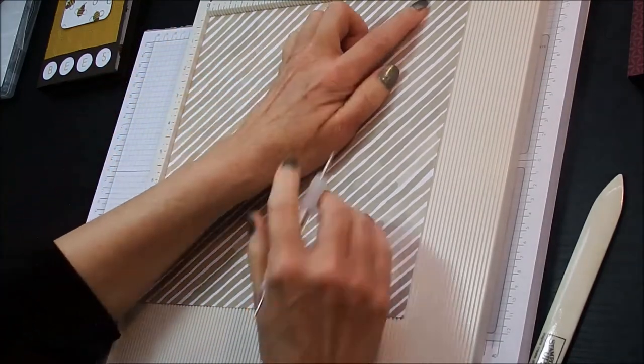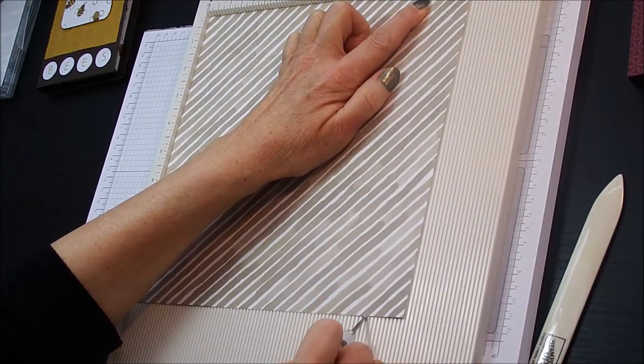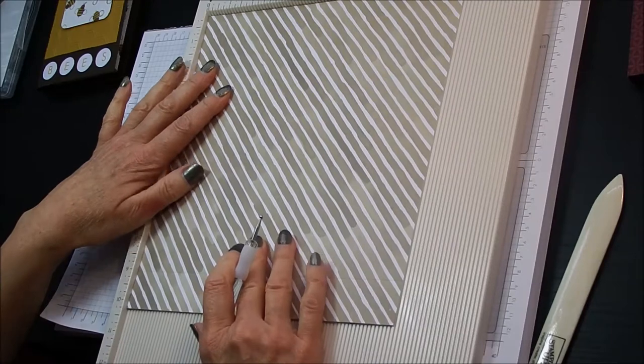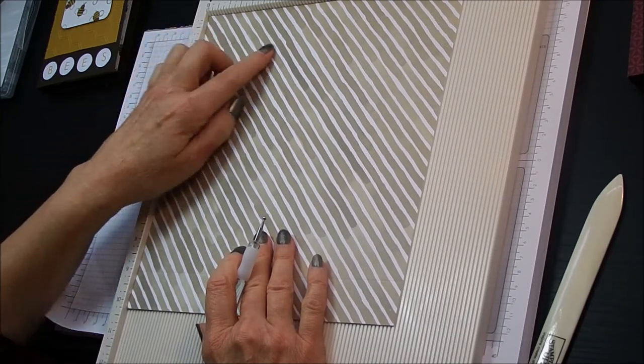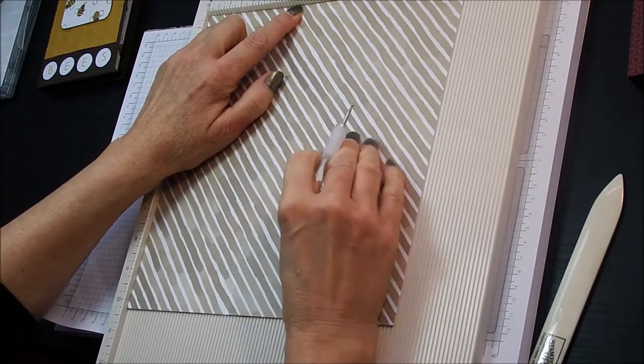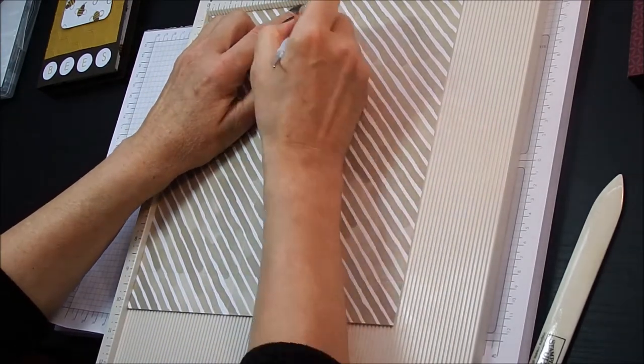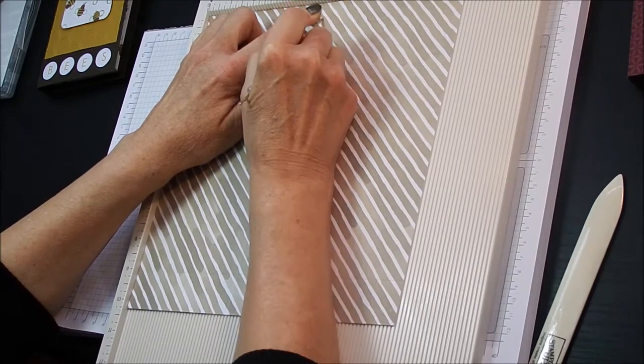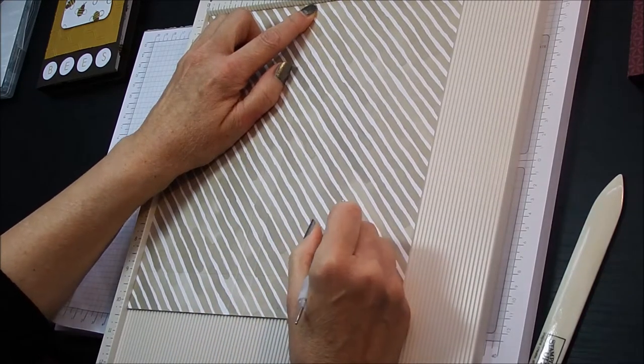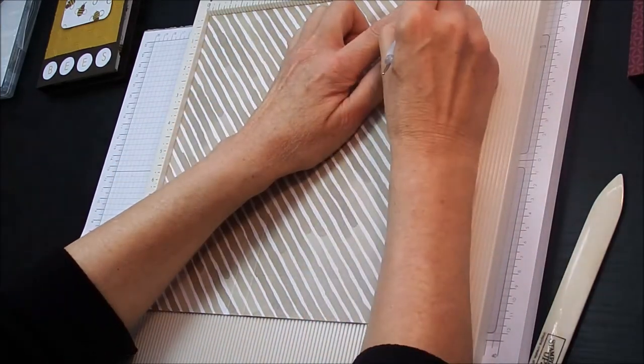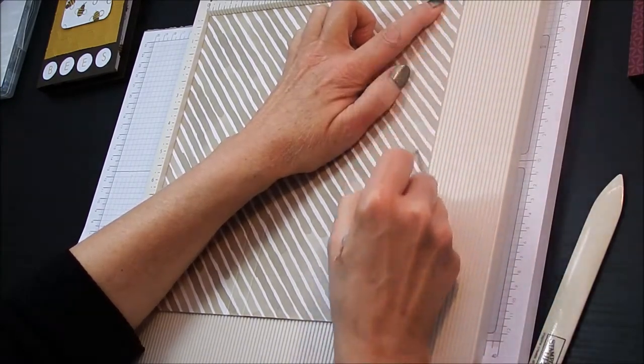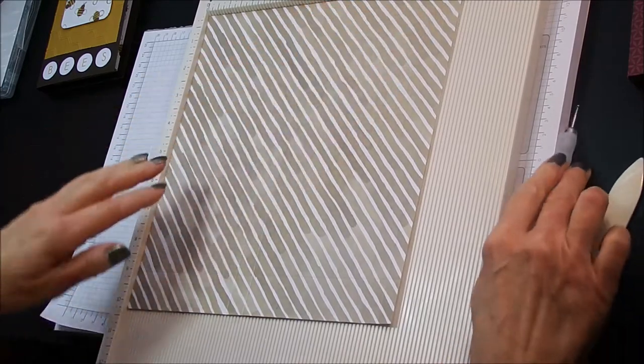And nine inches. And then we're going to turn that at 90 degrees. And we're going to score the ten inch side at four and one eighth inches, four and three quarters inches, eight and seven eighths inches, and nine and a half inches. So that's the scoring done.